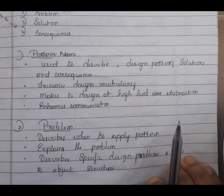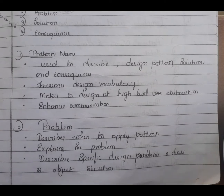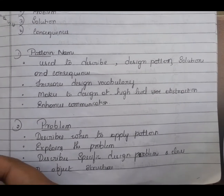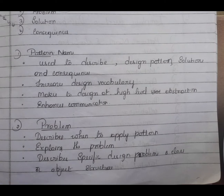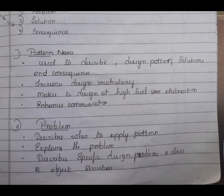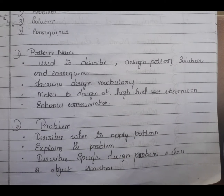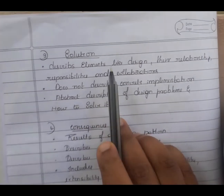Next is Problem. Problem describes when to apply the pattern and explains the problem and its context. It describes a specific design problem or a class or object structure. It may include a list of conditions that must be met before it makes sense to apply the pattern.